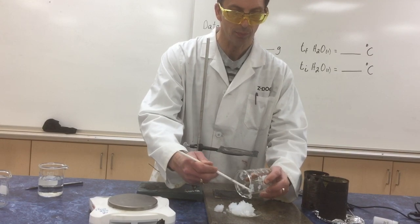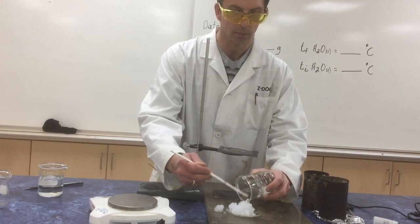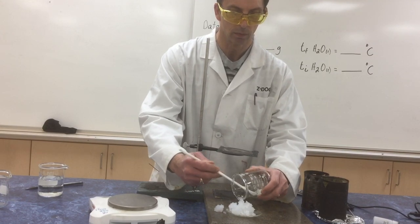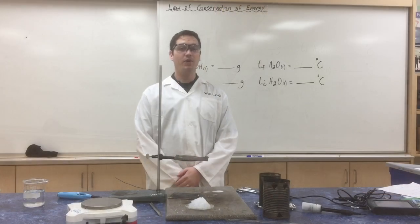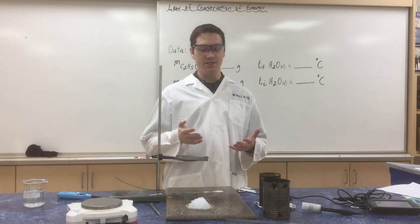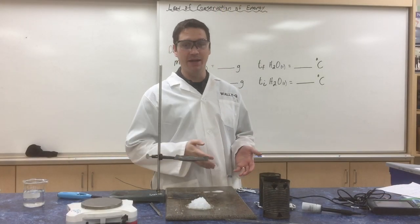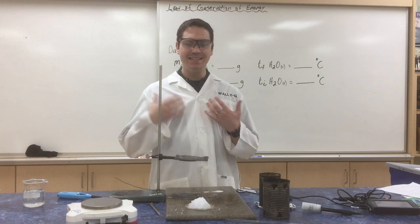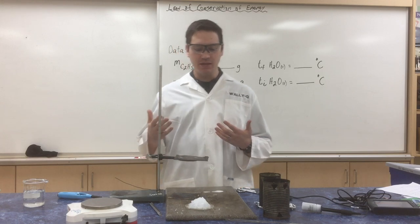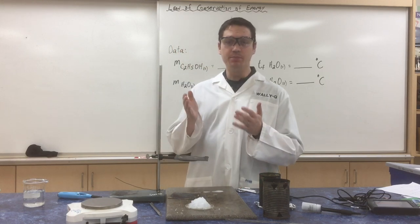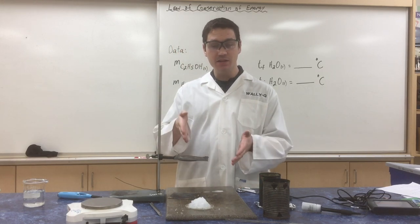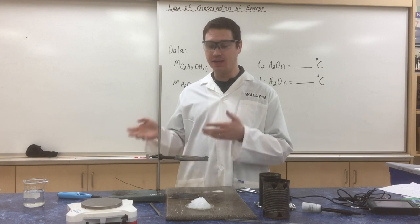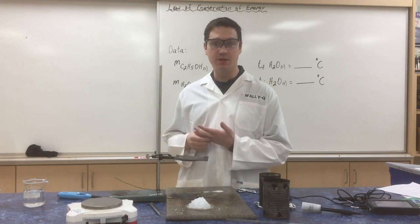Okay, so what we're going to do today is we're going to set up a metal can calorimeter. The idea being that we're going to burn the ethanol that's in the gel that we've just made out of the calcium acetate, water, and ethanol mixture.